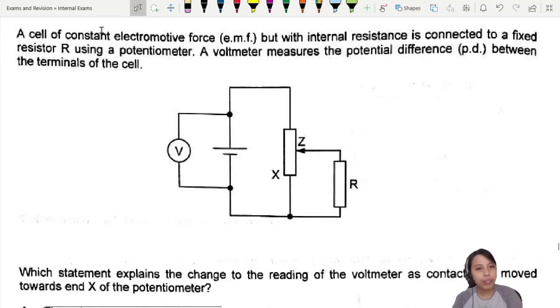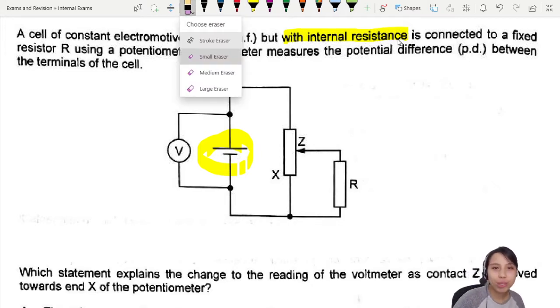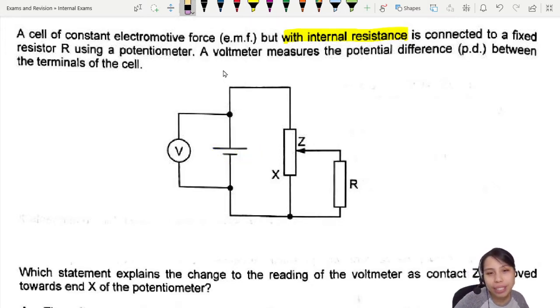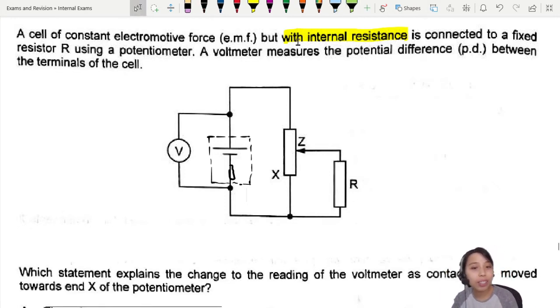Here we have a cell of constant electromotive force but with internal resistance. Why do they do this to us? With internal resistance, but the diagram they draw is like this. So what is the diagram? Usually they will draw it with a little R in a box. In cases like this, you have to read the question to know that there's internal resistance.